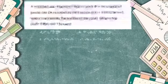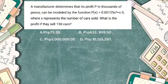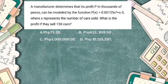Question number 1. A car manufacturer determines that its profit P in thousands of pesos can be modeled by the function P(x) = 0.00125 times x raised to the fourth power plus x minus 3, where x represents the number of cars sold. What is the profit if they sell 150 cars?